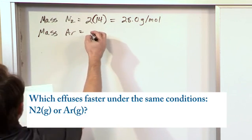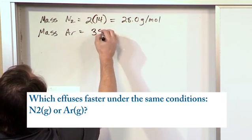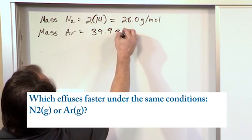And you can say the mass of argon gas, there's no diatomic molecule, so you just look straight up on the periodic table, 39.9 grams per mole.